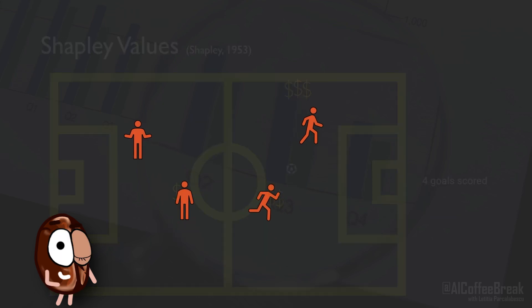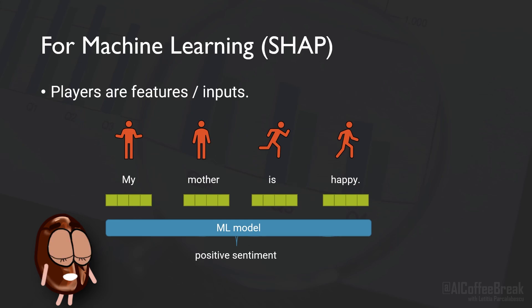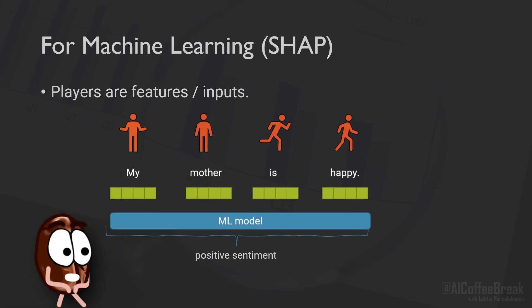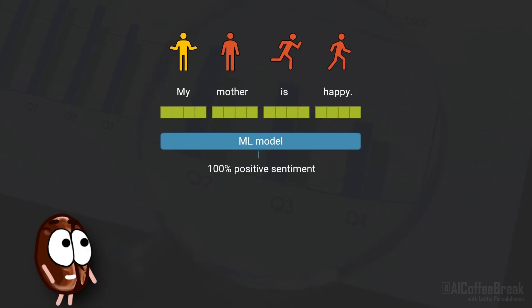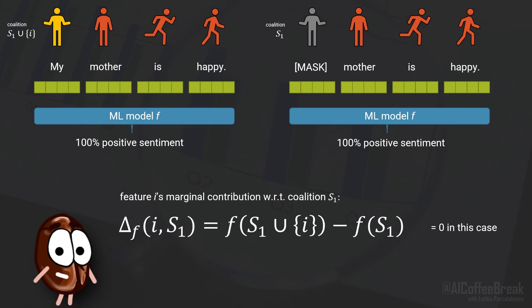To get the formula behind all this, let's switch to machine learning. In machine learning, players are inputs or features — for example, word tokens. The outcome of the game is the model's prediction — for example, the probability that this sentence expresses positive sentiment. The importance of an input is based on how much it contributed towards this prediction. To compute the Shapley value for a player, we look at what the prediction of the model is when the player is active versus when it is inactive. Then the so-called marginal contribution of the player is the difference between these two predictions, which is zero in this case, because the presence or absence of the token MI did not change anything.